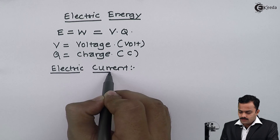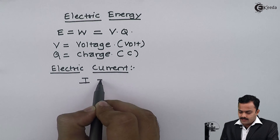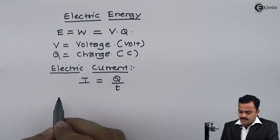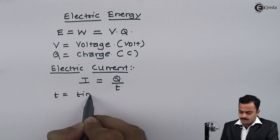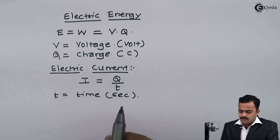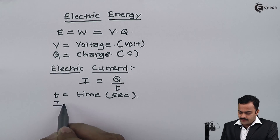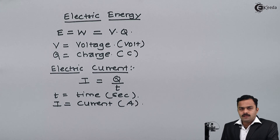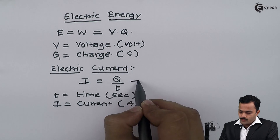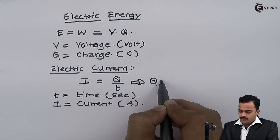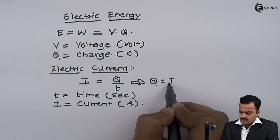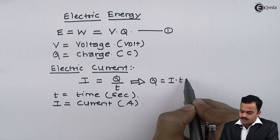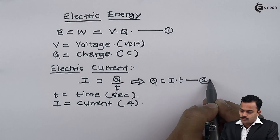We know electric current is defined as the rate of flow of charge. So I can say I, which is electric current, is given as Q by T, where T is the time with unit seconds, and I is the electric current with unit ampere.